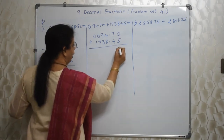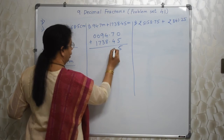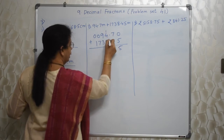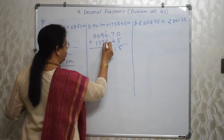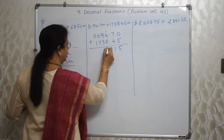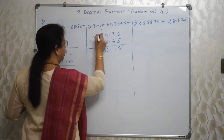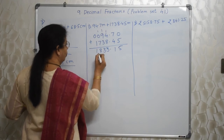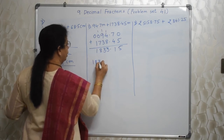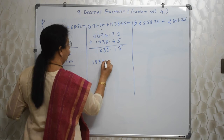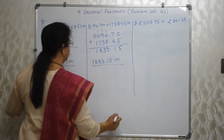0 plus 5. 7 plus 4, 11. So 1 carry. Decimal ke niche decimal aayega idhar. 5 plus 8, 13. Again 13. Yeh 8 aur yeh 1. So answer is 1833.15 meter. This is our answer.